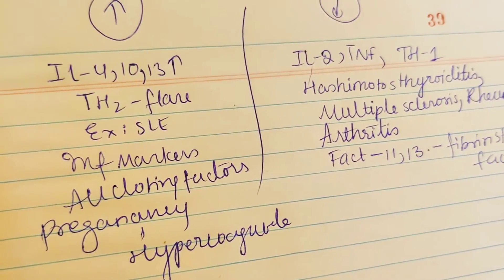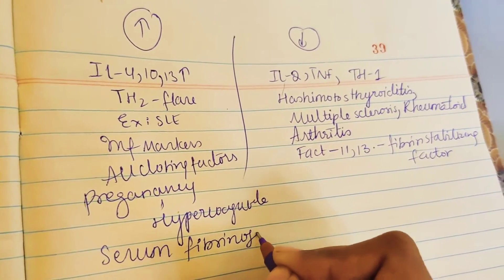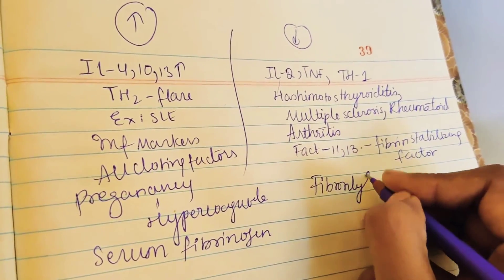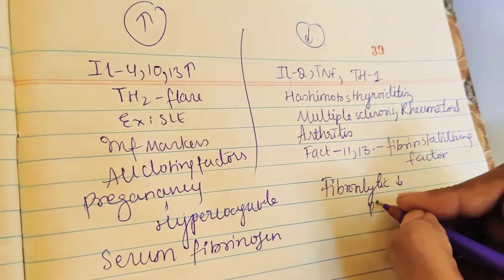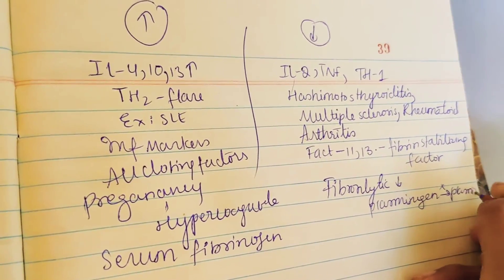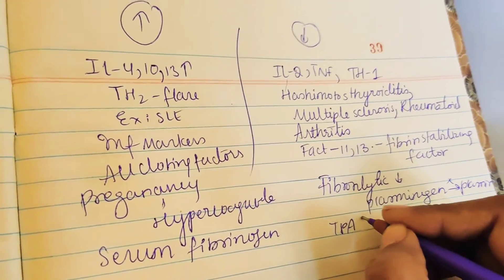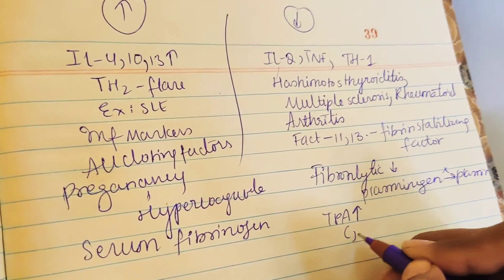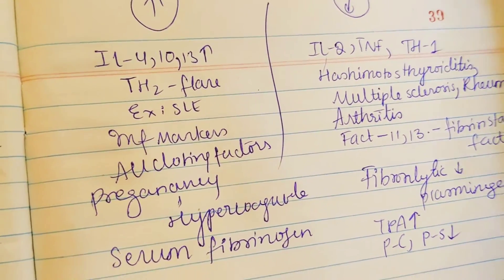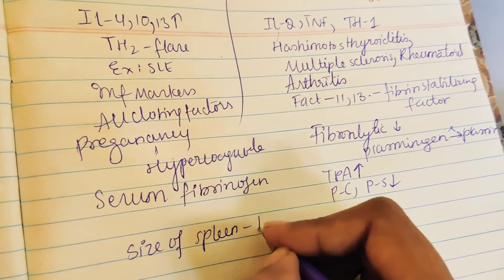Serum fibrinogen will increase, whereas fibrinolytic activity will decrease — plasminogen will not convert to plasmin. The TPA (tissue plasminogen activator) inhibitor increases during pregnancy. Anticoagulants protein C and protein S also decrease. The size of the spleen increases by 50 percent during pregnancy.